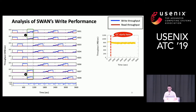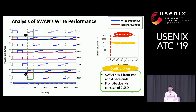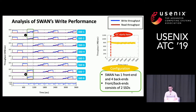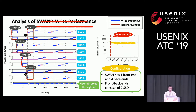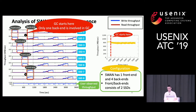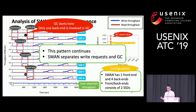For SWAN's write performance, we also measured individual throughput of all SSDs. For this evaluation, we used one front-end and four back-ends, each consisting of two SSDs. The last row is user-observed throughput. As you can see, the left figure shows the front-end only serves write requests. Around 1,000 seconds, one back-end starts garbage collection while the front-end handles write requests. Note that only one back-end is involved in garbage collection. We can confirm that SWAN separates write requests and garbage collection.